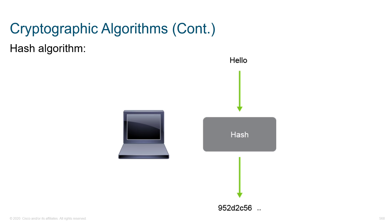Hashing is just taking data, applying an algorithm such as MD5, SHA-1, SHA-256, or SHA-512, and coming up with a digest. We can use that digest to verify that our data has not been tampered with.